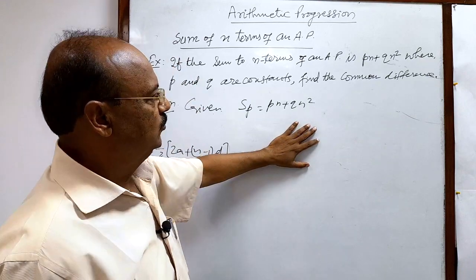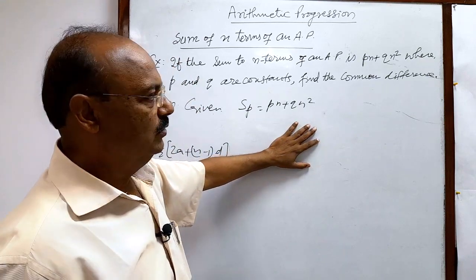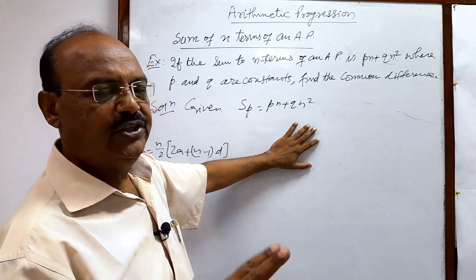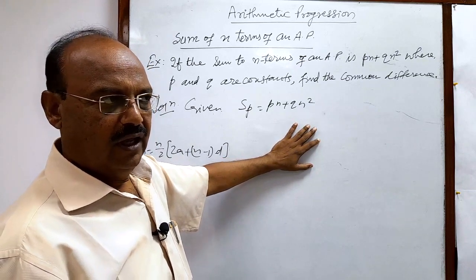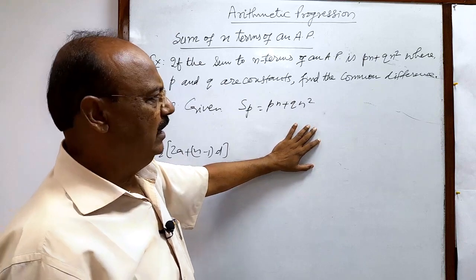So for finding the common difference, you know common difference is difference between two consecutive terms of an A.P. And that we can get very easily.